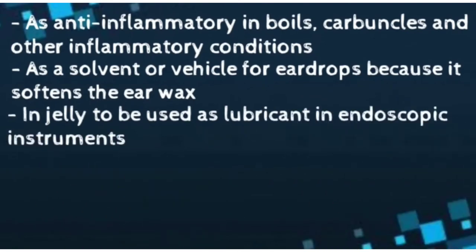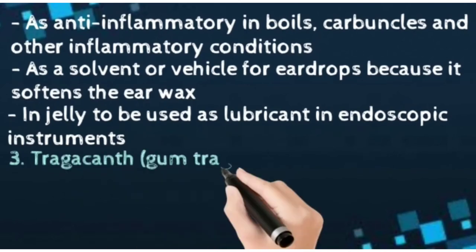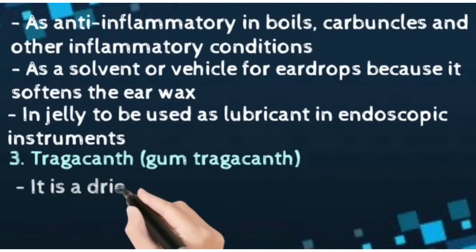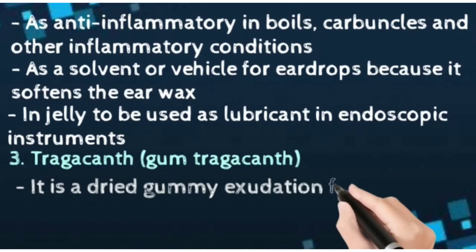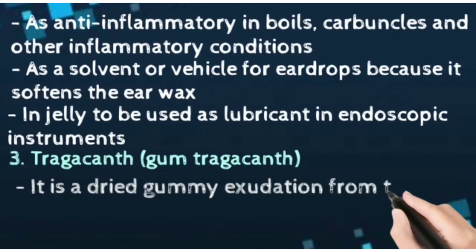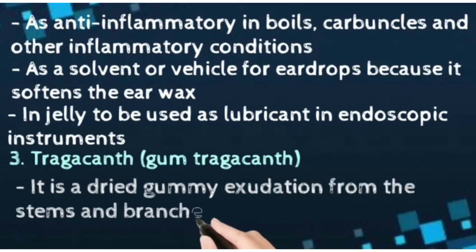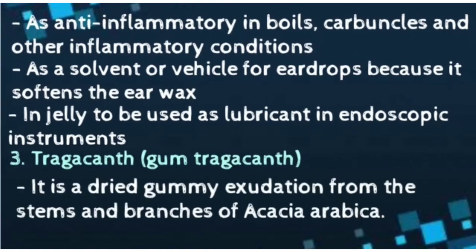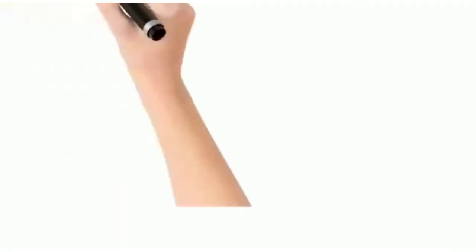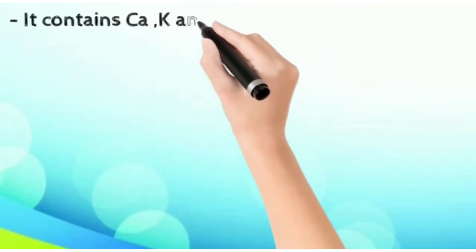The third demulcent is Tragacanth. It is a dried exudation from the stems and branches of Acacia arabica. It contains calcium, potassium, and magnesium salts of arabic acid.